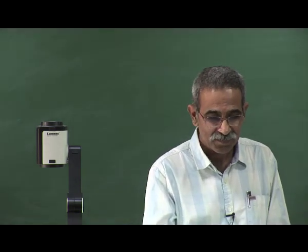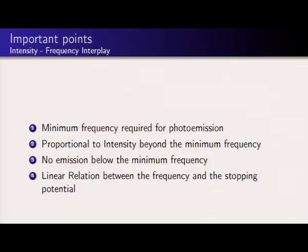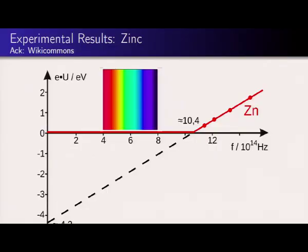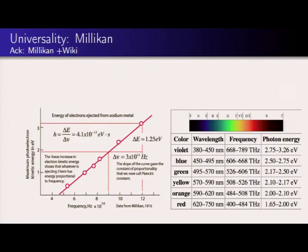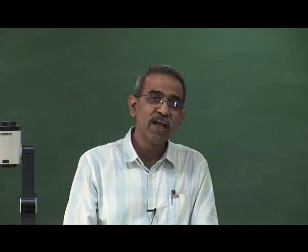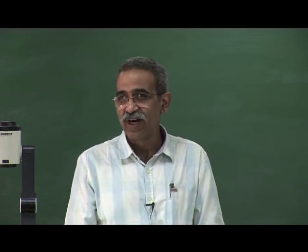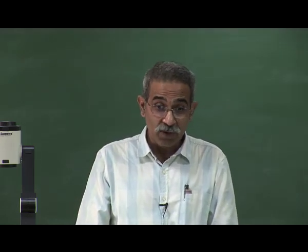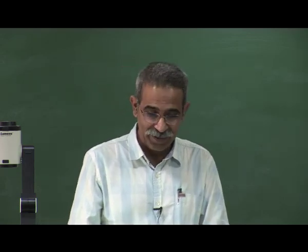What are the important points to notice? There is a minimum frequency. Below the minimum frequency you can vary your intensity, do anything you want, and the electrons will refuse to budge — they stay put in the metal. We have been asserting that energy depends on amplitude and intensity, but the electrons refuse to buy that argument. Once you cross the frequency barrier — go beyond the minimum frequency — the number of electrons depends on intensity, becoming proportional to it. So there is a double game being played.